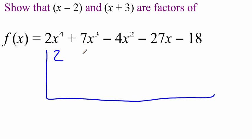So setting up our first synthetic division, grab the coefficients: 2, 7, negative 4, negative 27, negative 18. And I'm just going to start with this (x - 2). So remember, grab the number on the end, but do a sign change. So now it's a positive 2.